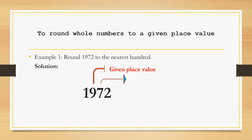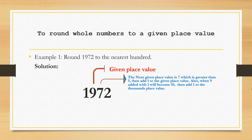We're going to take note of the next value after the given place value. This is 7, which is greater than 5. If it is greater than or equal to 5, we're going to add 1 to the given place value.